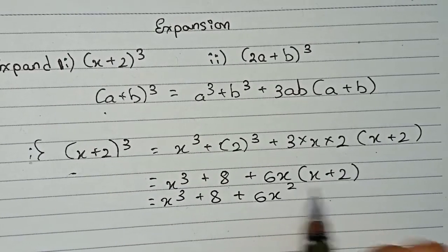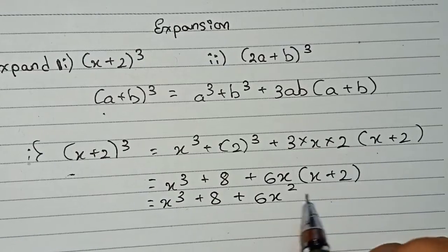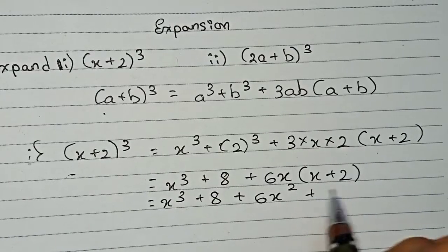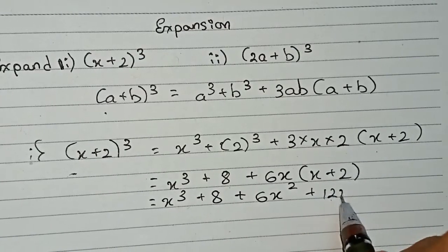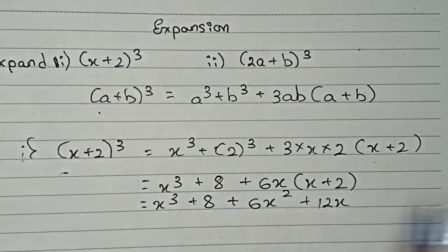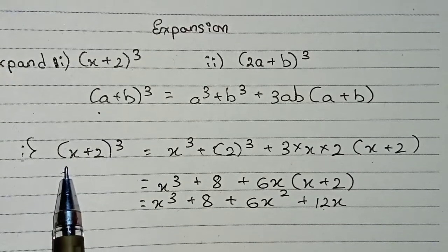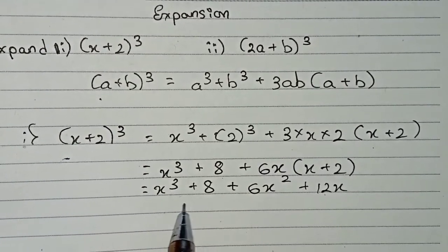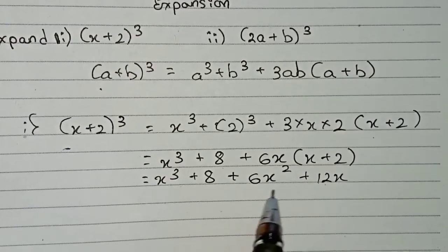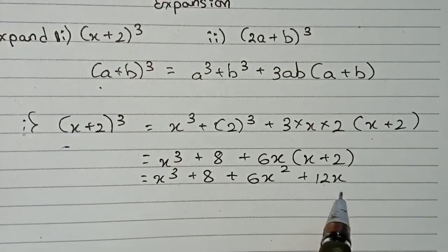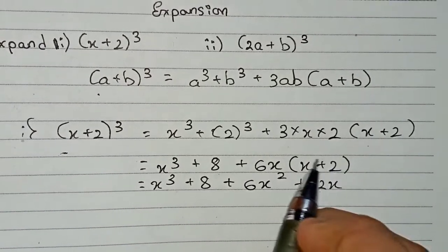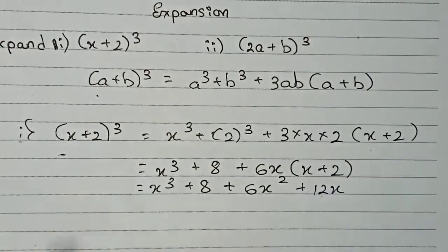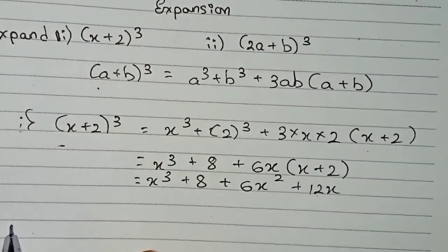And 6x into 2 gives 12x. So the expanded form of x plus 2 whole cube is x cube plus 8 plus 6x squared plus 12x. Now I move to the next question.